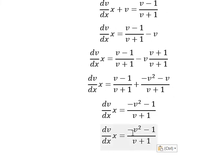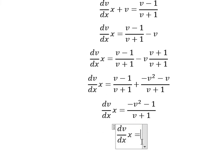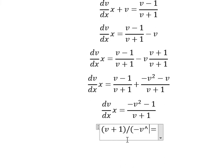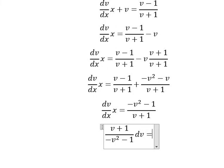So this one we put on the left, dv, and x we put on the right. So we have v plus one over negative v squared negative number one, dv equals to dx over x.